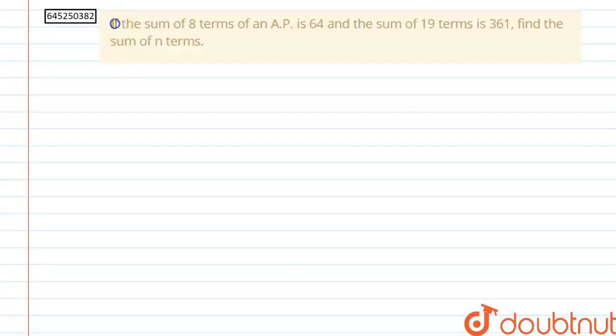The question is, if the sum of 8 terms of an AP is 64 and sum of the 19 terms is 361, then we have to find sum of n terms of this AP.